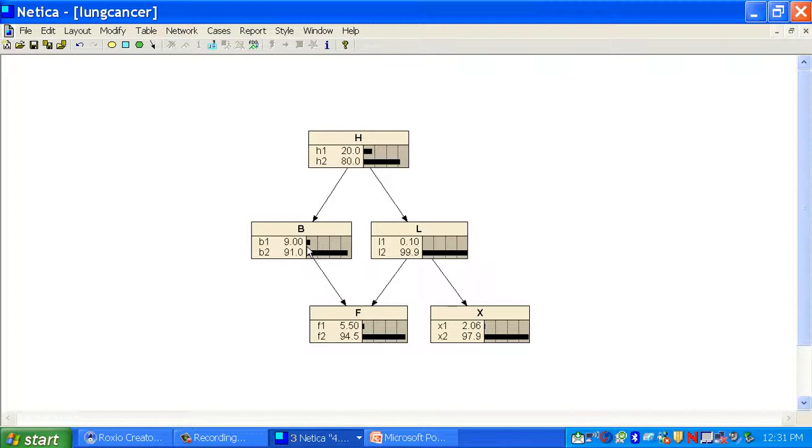It shows the prior probabilities, which are computed from the conditional ones. That is more meaningful because as you do inference, these values have more meaning than the conditional distributions, which are actually used to specify the network. So the prior probability of having bronchitis is 0.09.